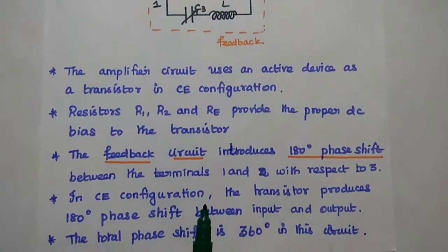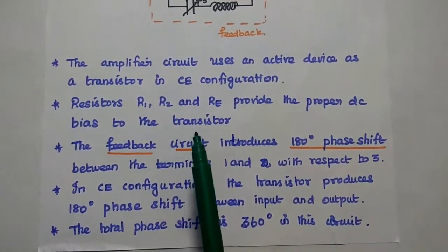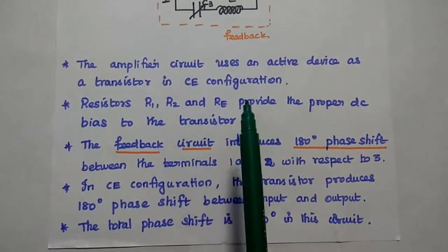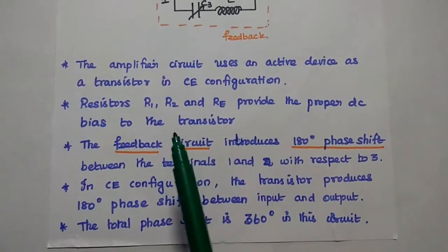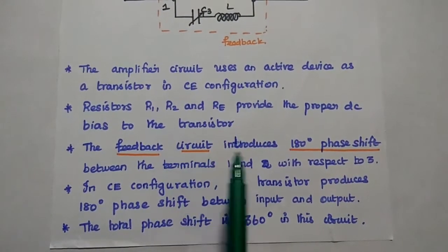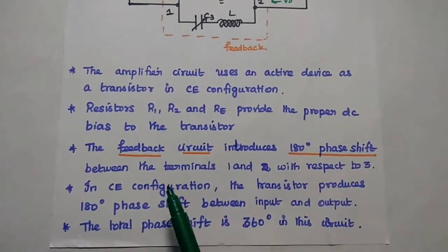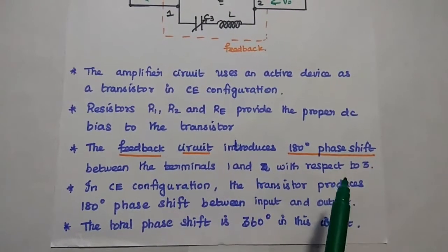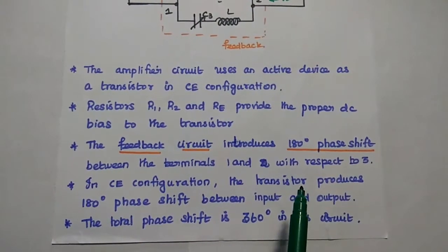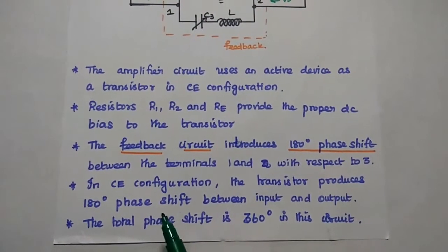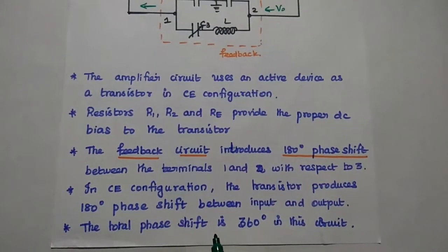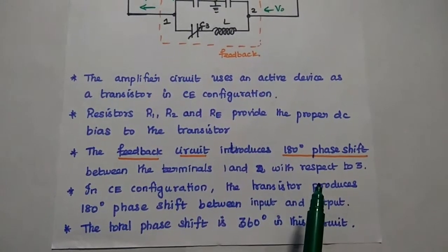The amplifier circuit uses a transistor in CE configuration. Resistors R1, R2, and RE provide proper DC bias to the transistor. The feedback circuit introduces a 180-degree phase shift between terminals 1 and 2 with respect to terminal 3. In CE configuration, the transistor produces a 180-degree phase shift between input and output. Therefore, the total phase shift in this circuit is 360 degrees.